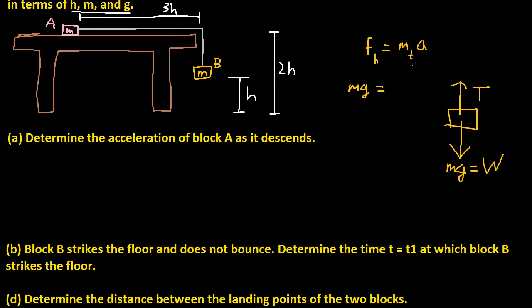To calculate the acceleration, we take the force of the hanging object and set it equal to the total mass times acceleration. So mg equals 2m times a. You divide each side by 2m to find acceleration. So mg over 2m, and the m's cancel out. We are left with g over 2. So that is acceleration.